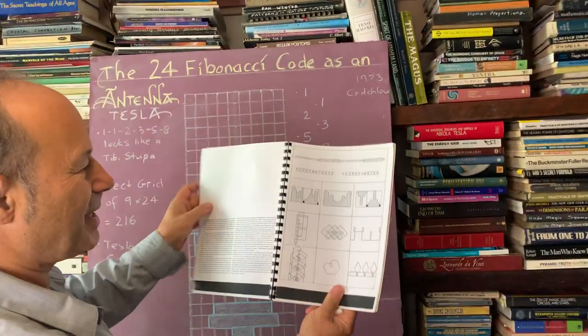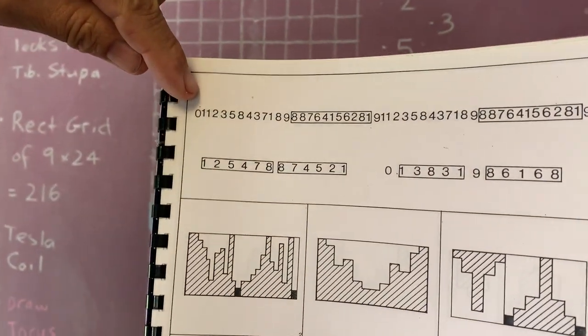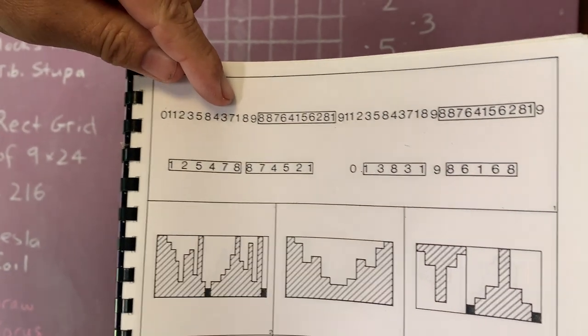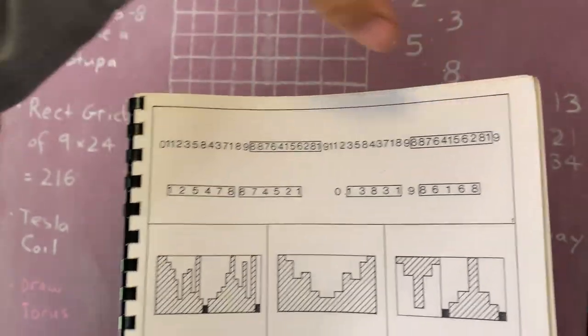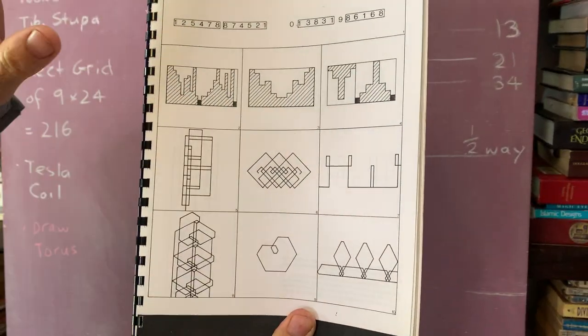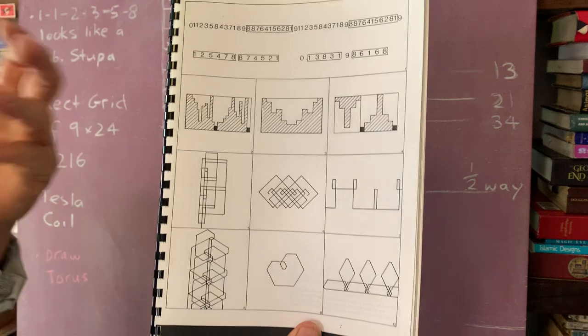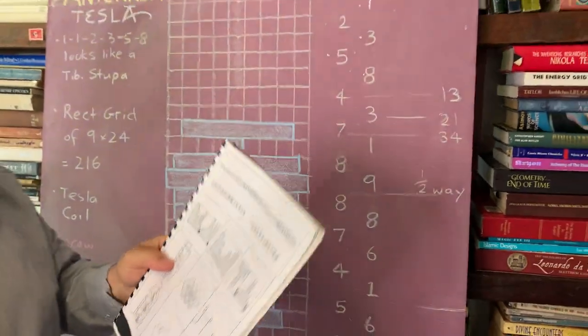So inside this book here, you can see that up on the top here, we've got the 1, 1, 2, 3, 5, 8, 4, 3, 7. That's the 24 code repeating and it repeats forever. And what they did was they cleverly analyzed and isolated certain parts of it to extrude pattern from the 24 code.